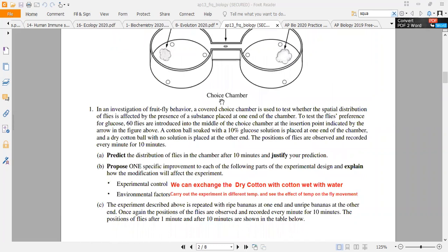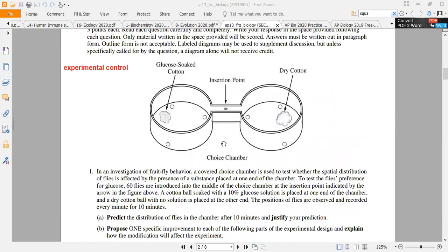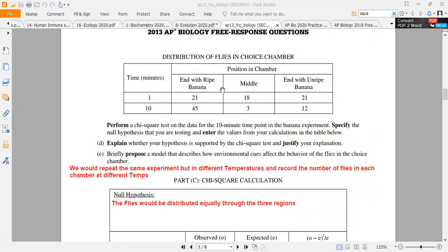Here I will explain the glucose-soaked banana, ripe banana in the middle chamber. This addresses the distribution of flies throughout the rooms after 10 minutes.